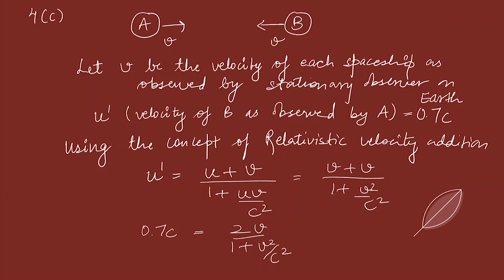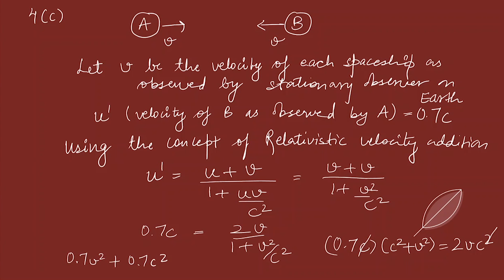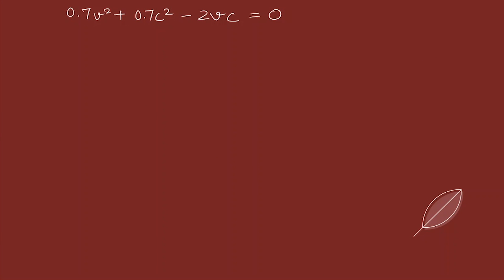Solving this equation: 0.7c(1 + v²/c²) = 2v, which rearranges to the quadratic equation 0.7v² - 2vc + 0.7c² = 0.